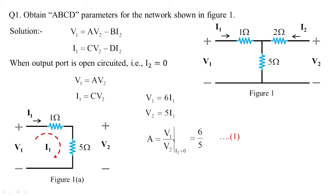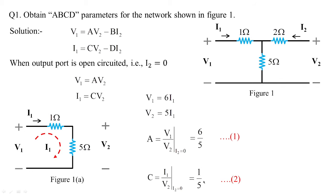A = 6/5 is called the reverse voltage gain, since the numerator is V1 and denominator is V2. For C, we need I1/V2 with the output open-circuited: since V2 = 5I1, we get C = I1/V2 = 1/5. This is current divided by voltage, so C is an admittance, with units of Siemens (mhos).